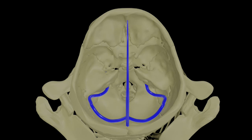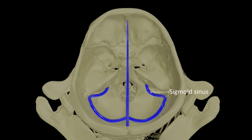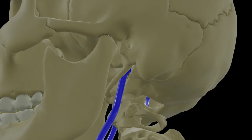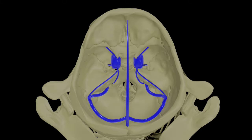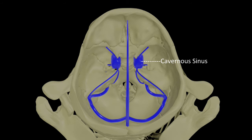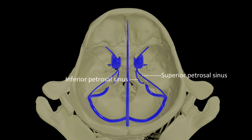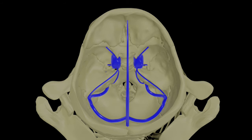From this confluence of sinuses emerge two sinuses, one on each side, called the transverse sinuses - the right and left transverse sinuses. They make an S-bend here called the sigmoid sinus, and this sigmoid sinus exits the skull through the jugular foramen. As it exits the skull it is called the internal jugular vein. There is another sinus at the border of the lesser wing of sphenoid called the sphenoparietal sinus, which opens into the cavernous sinus on either side of the body of the sphenoid. This cavernous sinus drains via superior and inferior petrosal sinuses into the transverse and sigmoid sinuses respectively. So as you can see, all the venous blood from inside the skull finally drains into the internal jugular vein.